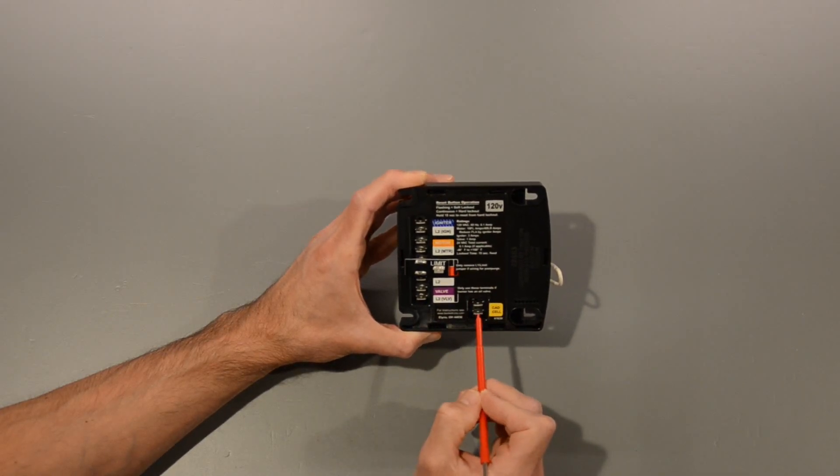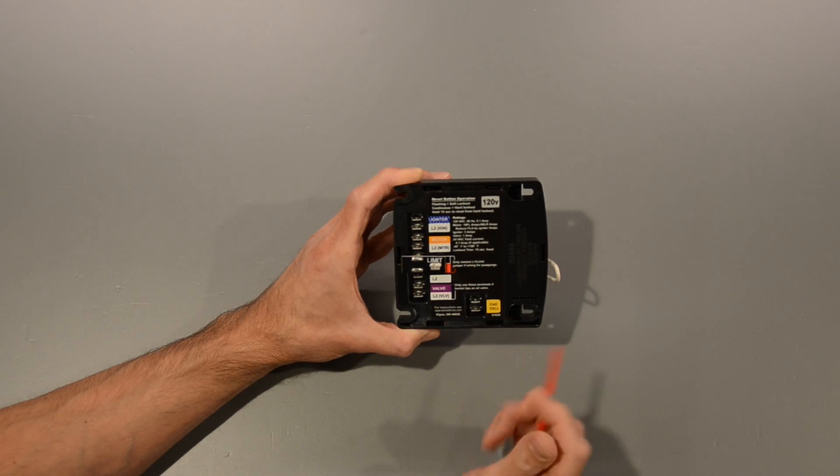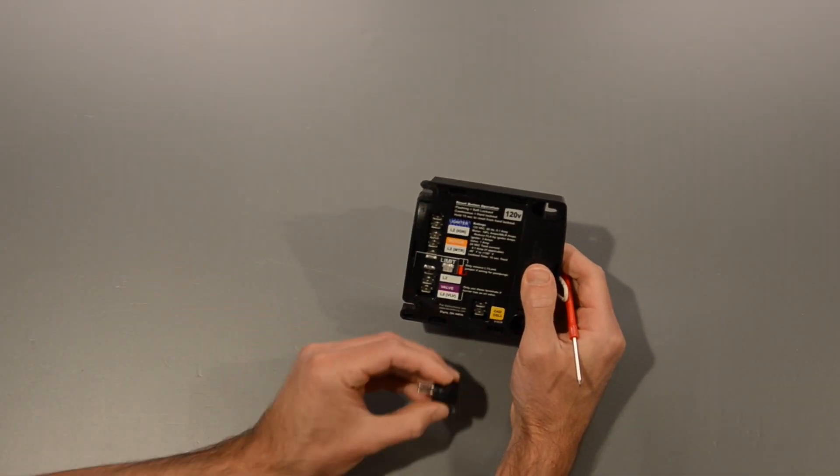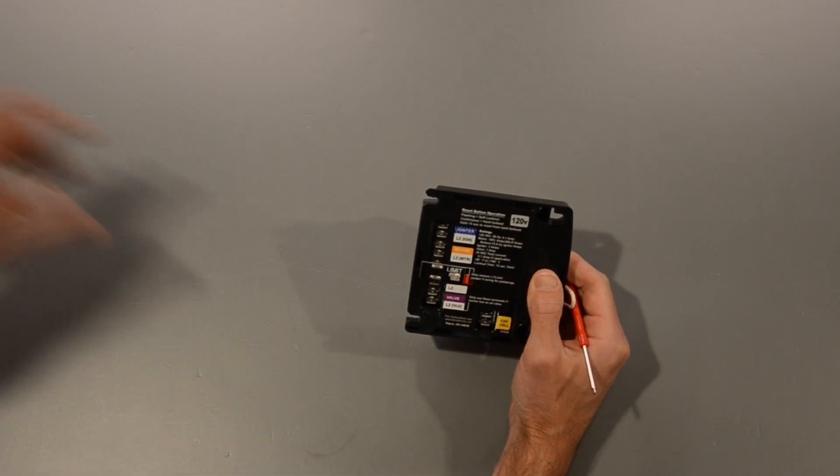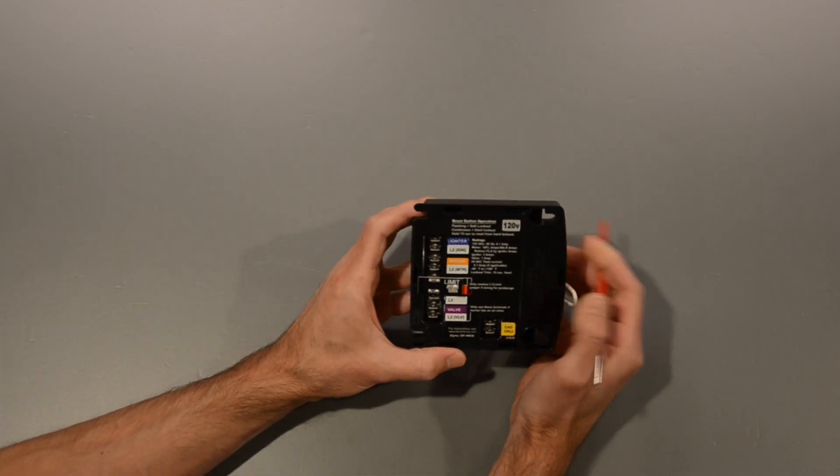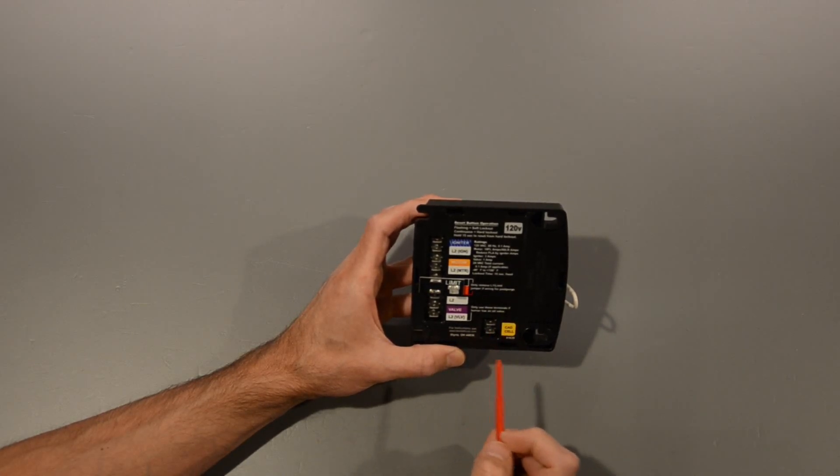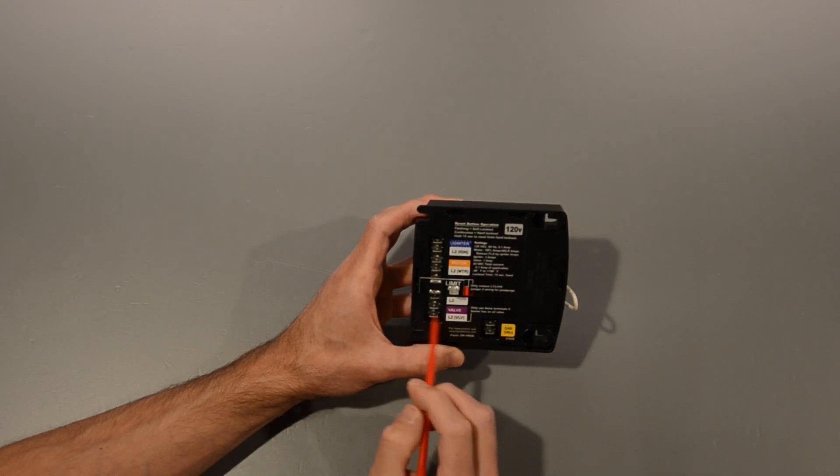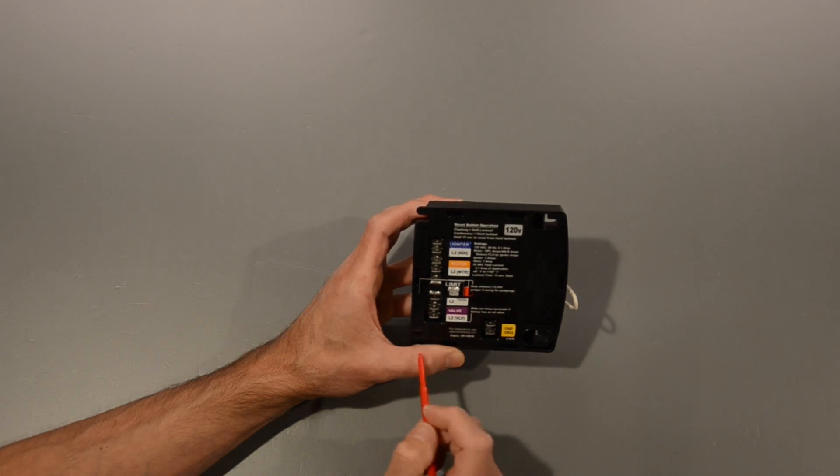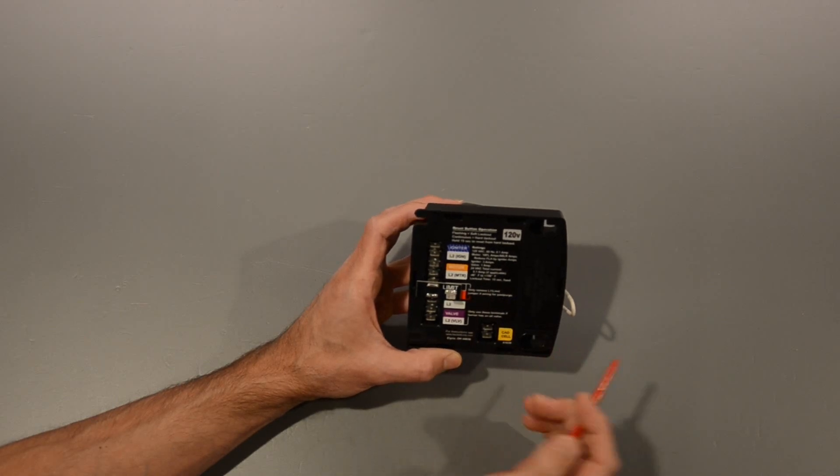There's also a cadmium sulfide cell that connects to these terminals, and that acts as a safety feature. This is what it looks like, and this acts as a flame detector. After that 15 second period, as long as this cadmium sulfide cell is not detecting light, meaning there is no flame, it will go ahead and open the solenoid valve to allow the system to ignite. If this does detect light before that time period, this will trip out on safety and shut everything down.